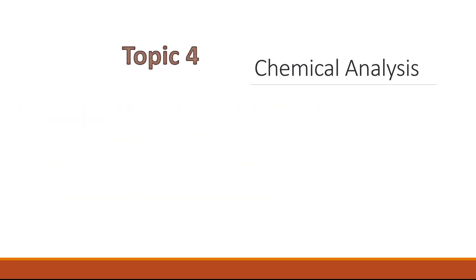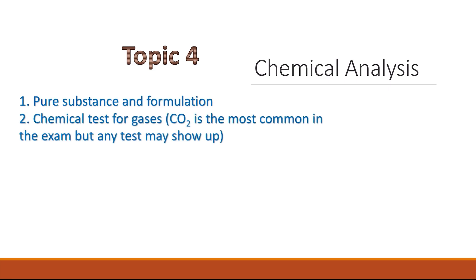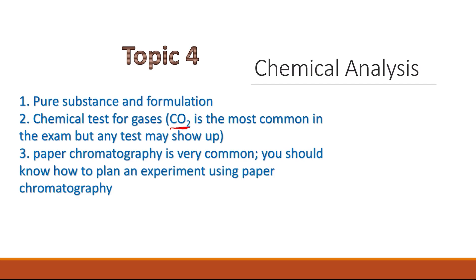Topic 4 is chemical analysis. This covers pure substances and formulations. They could ask you how to identify whether a substance is pure or not using the melting point. You should know the chemical tests for gases — the most common gas in the exam is carbon dioxide, however there is no guarantee they will not ask about hydrogen, oxygen, or chlorine. Paper chromatography is very common in the Paper 2 chemistry exam, and you should know how to plan an experiment using paper chromatography.